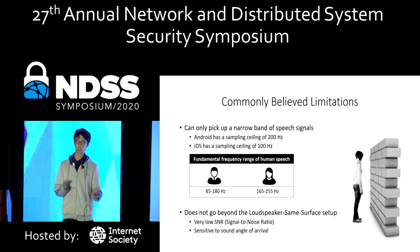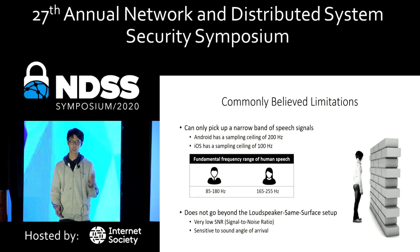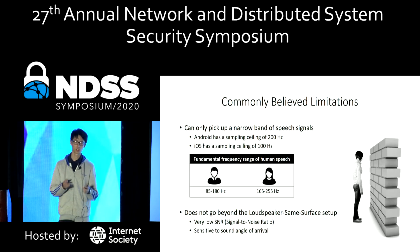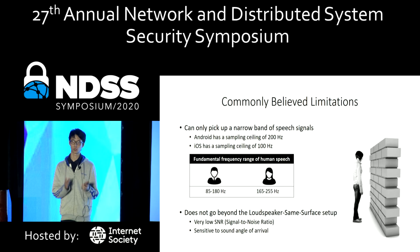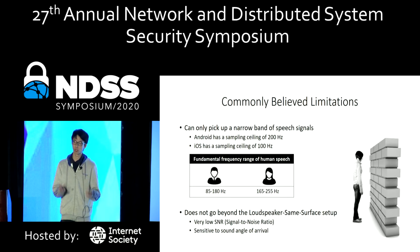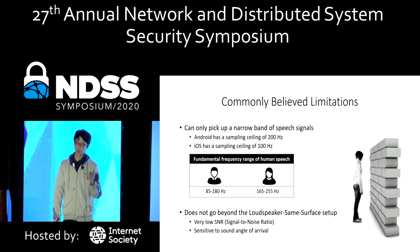This kind of attack is still considered low risk due to two commonly acknowledged limitations. The first limitation is that people believe all motion sensors inside the smartphone have a really low sampling rate ceiling of 200 Hz. With this low sampling rate, they are only able to pick up a really narrow part of the frequency components of human speech voice. The second limitation is that, according to previous work, the only feasible way to conduct this attack is to place the smartphone and speaker on the same solid surface.